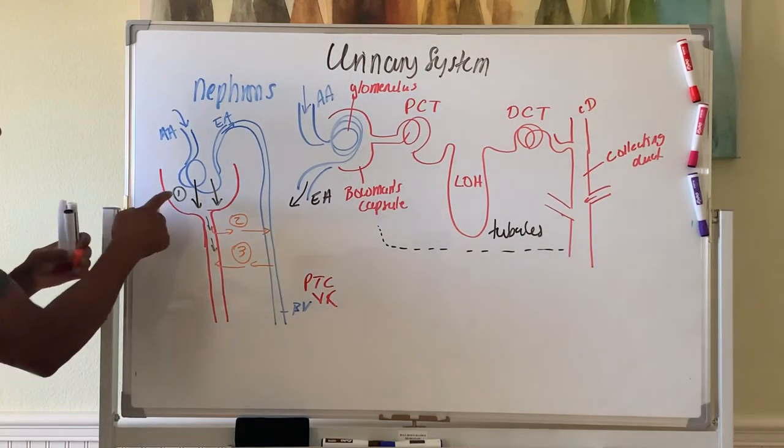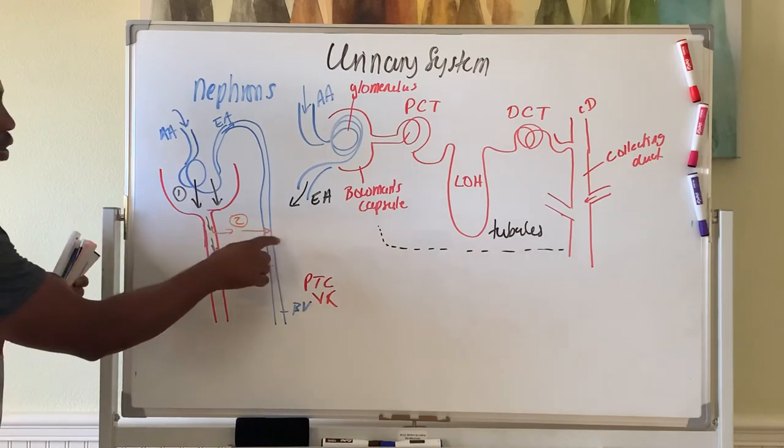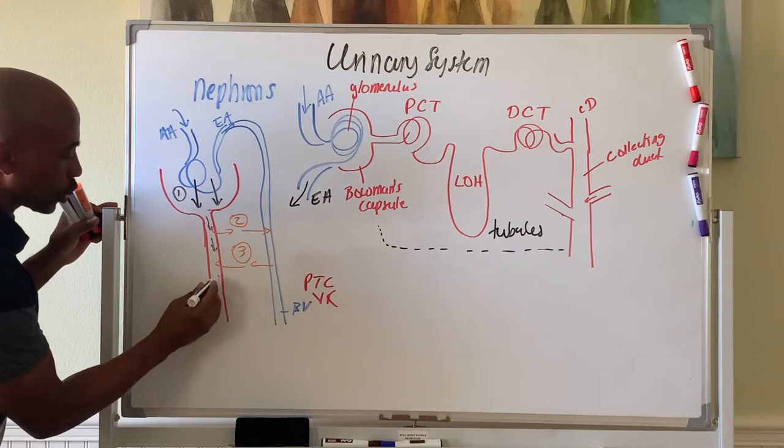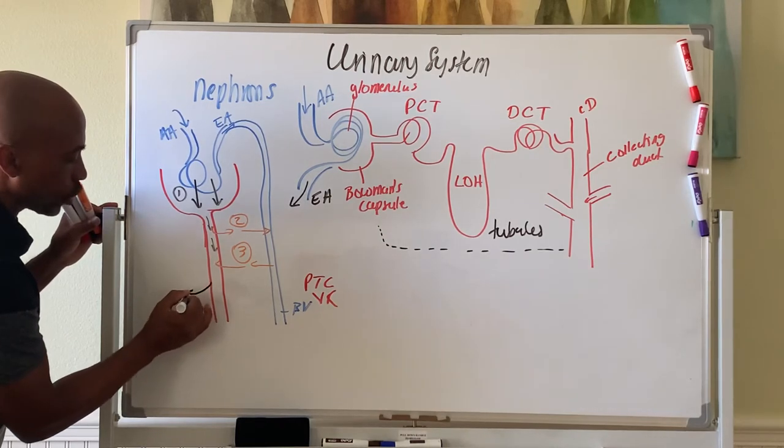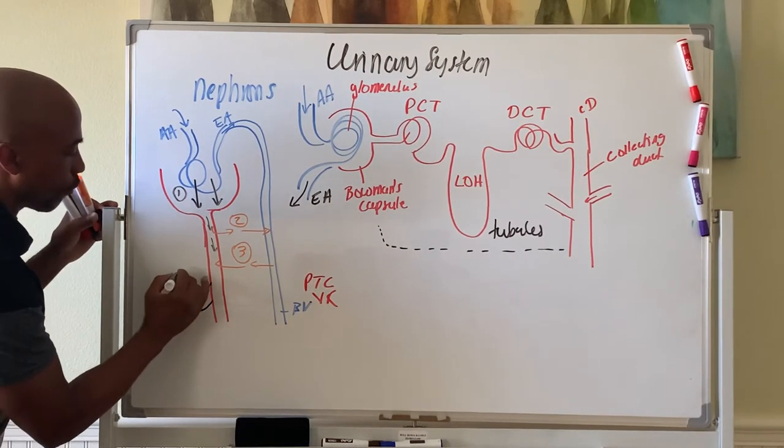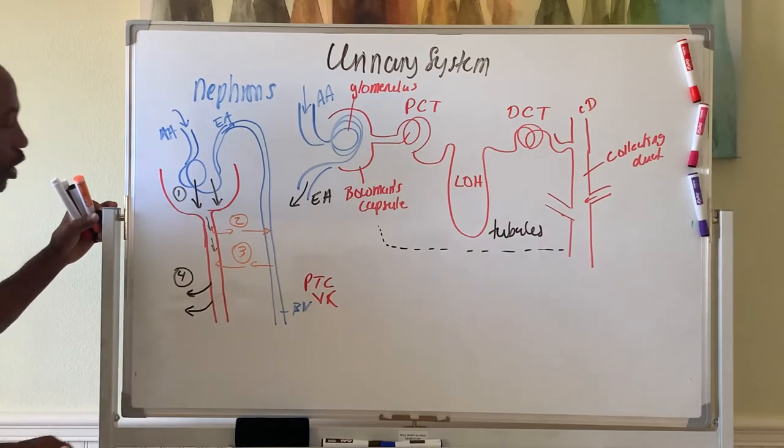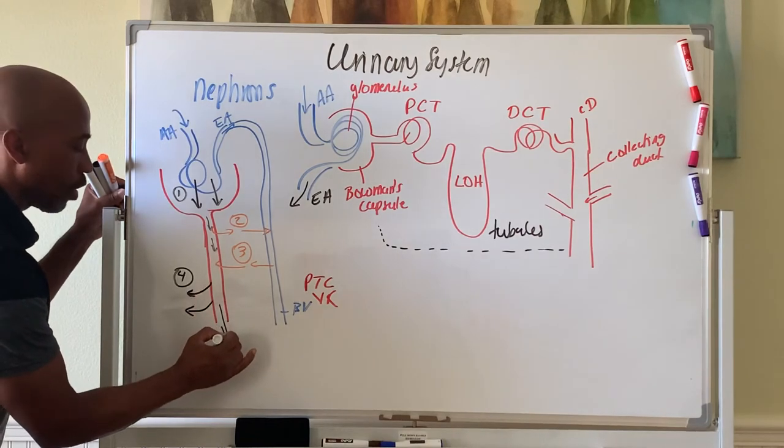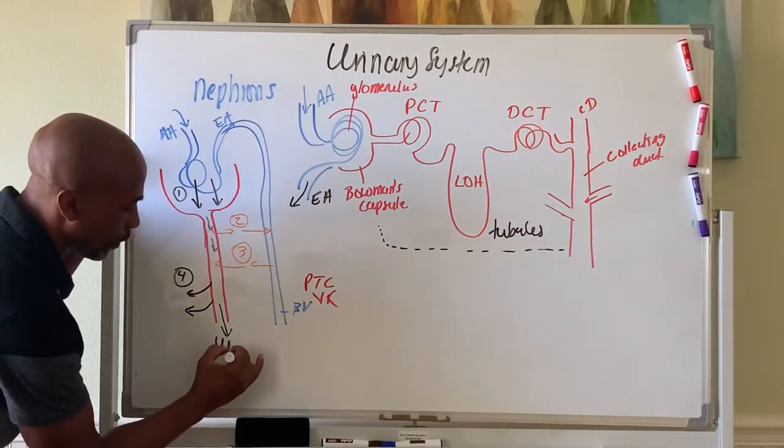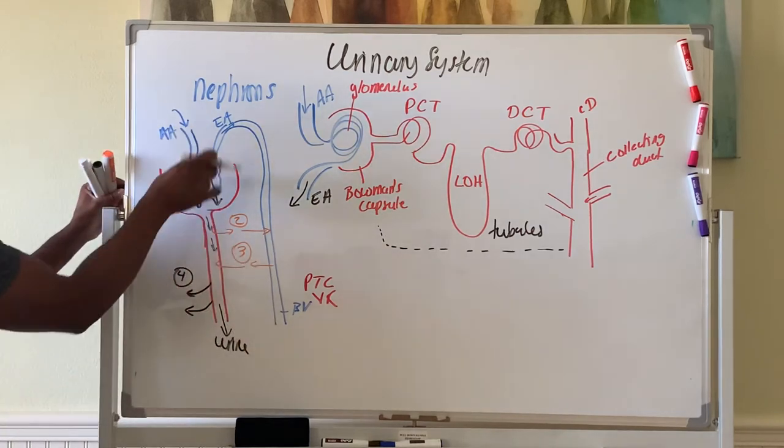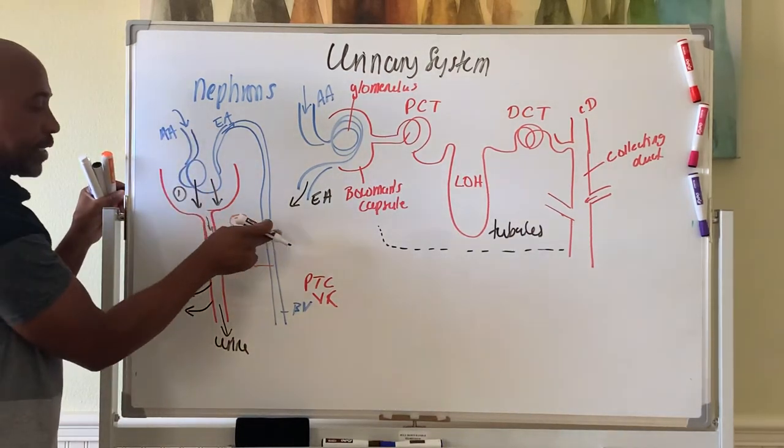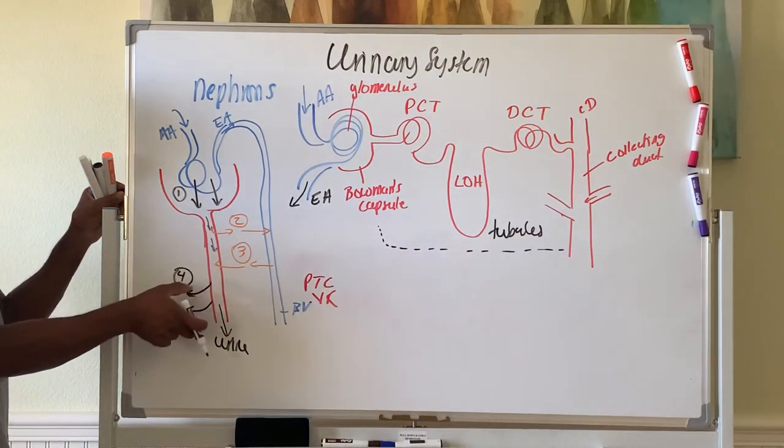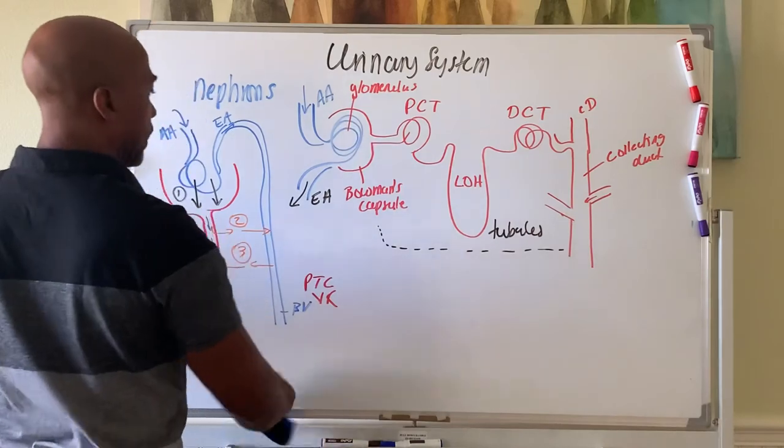And then, so you filter, you reabsorb, you secrete, and what's left behind. At some point along the way, you also will handle or control how much water you lose. So step four is called water conservation. And then what's left behind is released from the body or sent to your kidney as urine. So you filter the blood, reabsorb most of it, send some stuff back into it, and then play with how much water is in your kidneys. So these four processes occur.